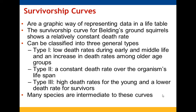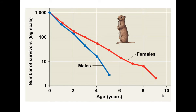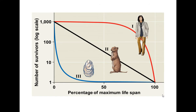Survivorship curves let us visualize the data in a life table. For Belding's ground squirrels, there is a pretty constant death rate — that is a Type II curve. Type I shows low death rates in early and middle ages with an increase among older individuals, as seen in humans. Type III shows very high death rates for the young with much lower death rates for survivors, as seen in mollusks or other aquatic animals. The females in the squirrel data didn't drop off as rapidly as the males.